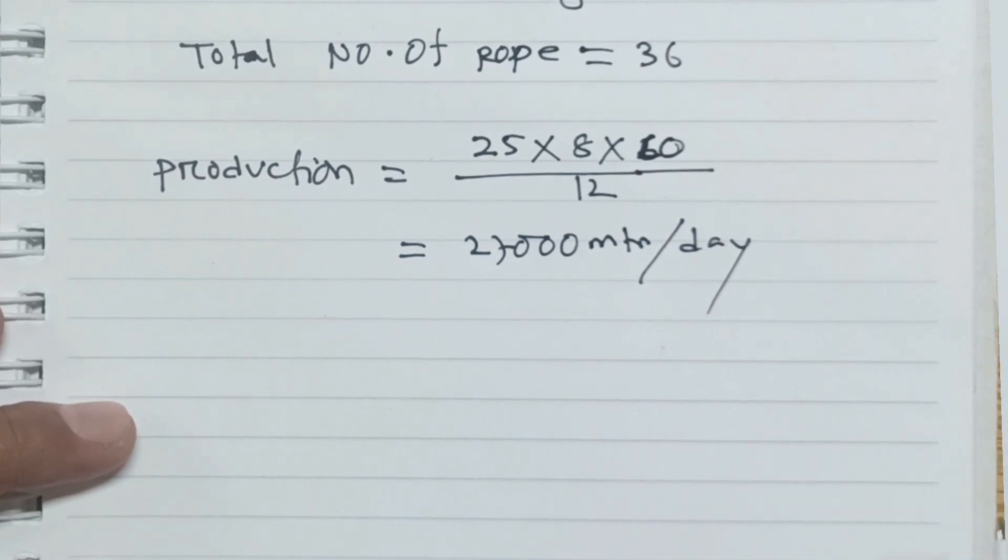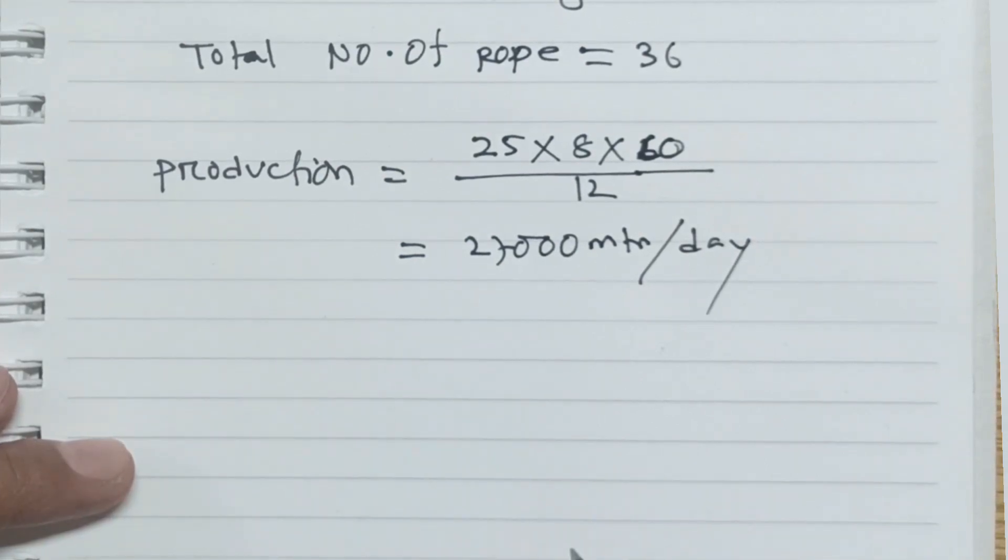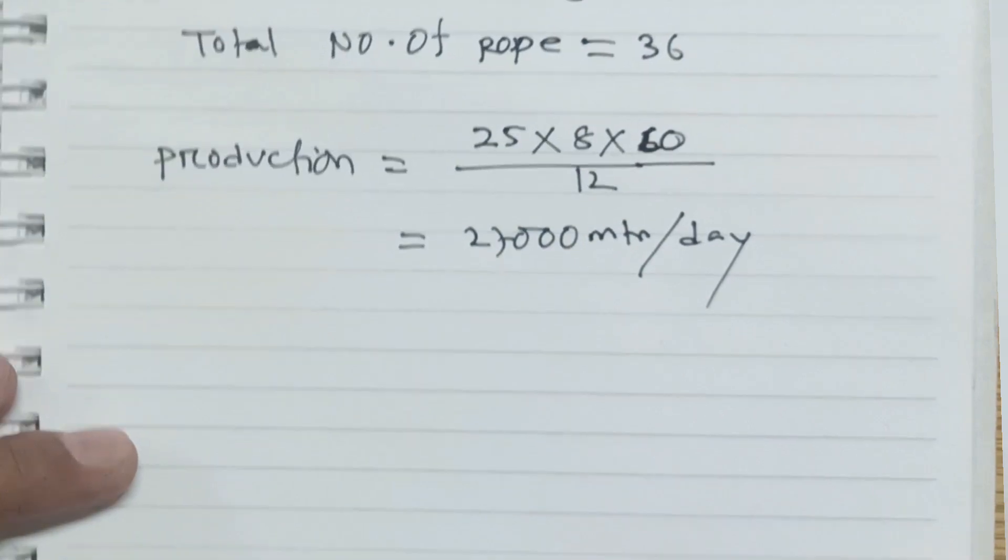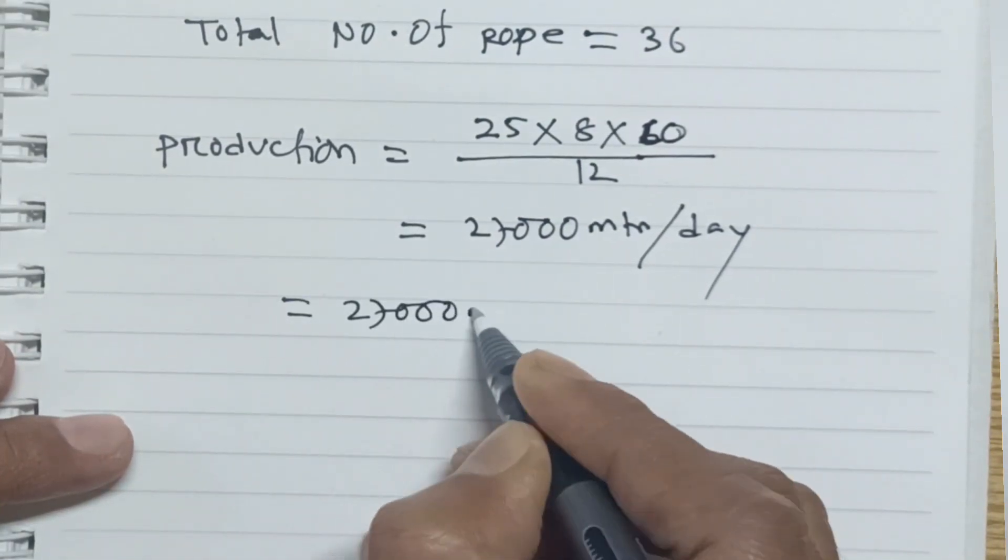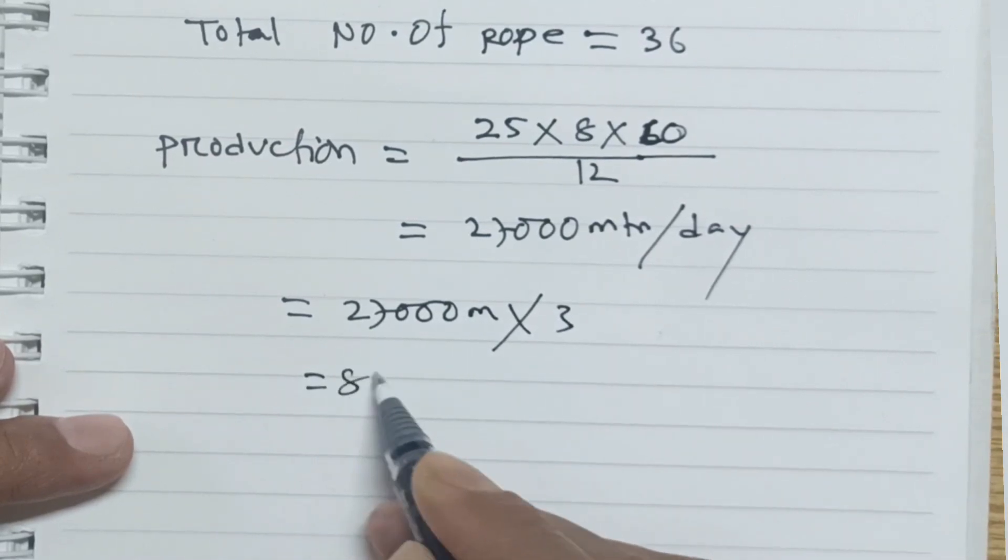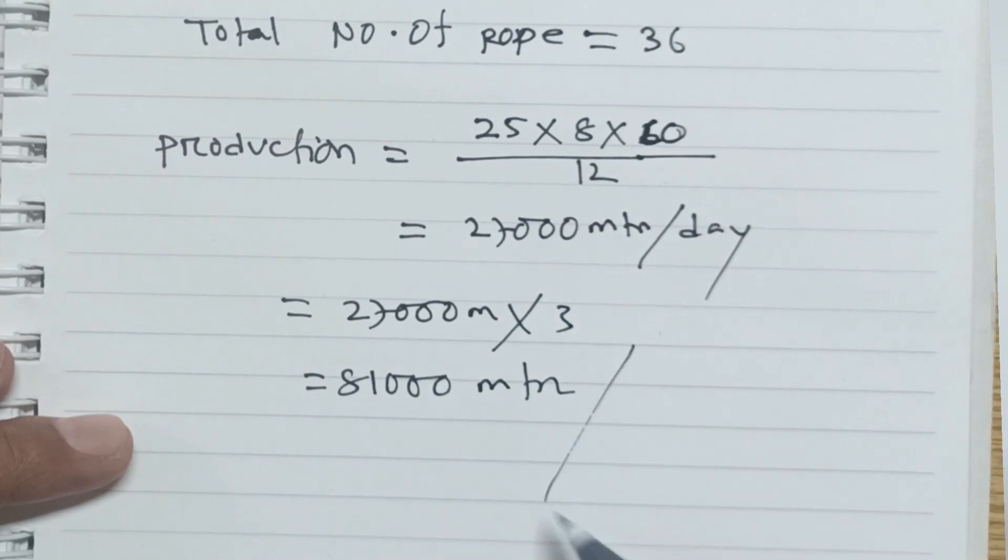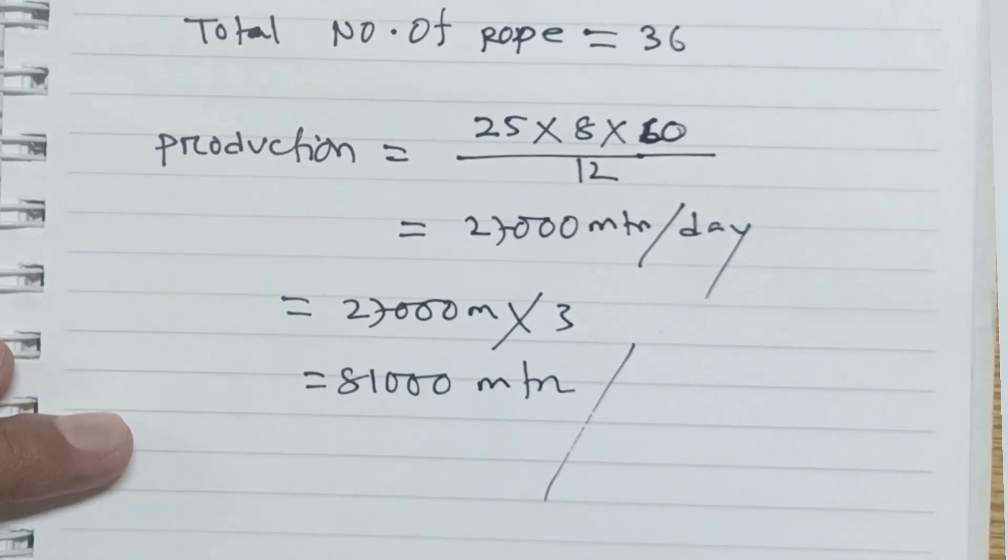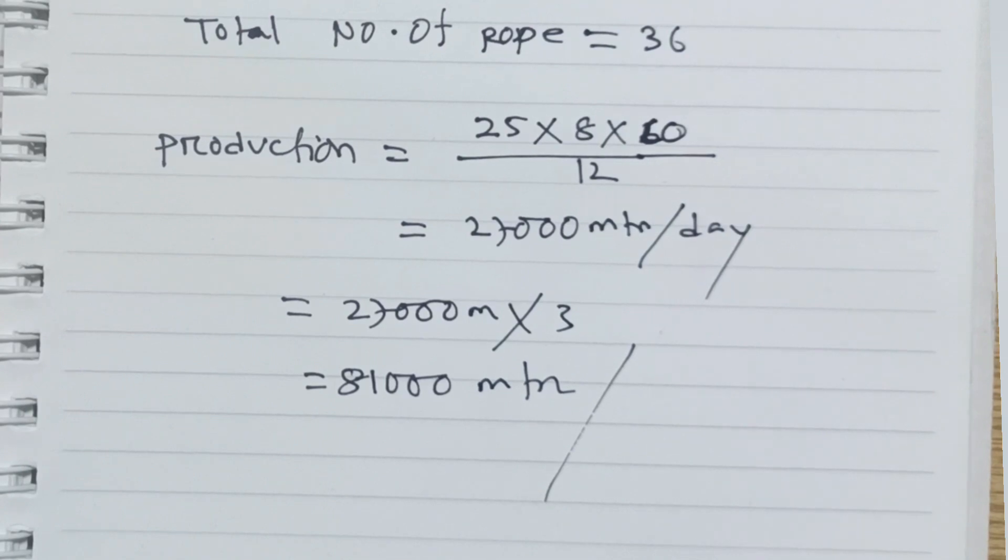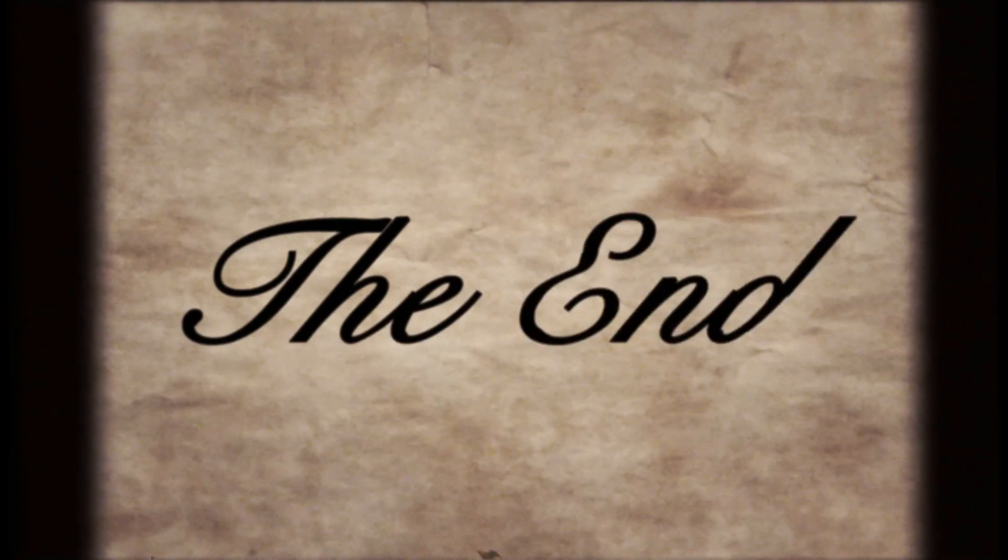Then multiply by 3, which gives 81,000 meters. We need to consider passage change, color vibration - for this, deduct 5 to 10 percent for downtime.